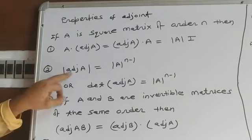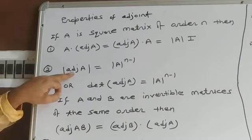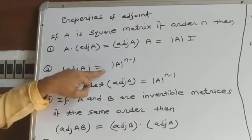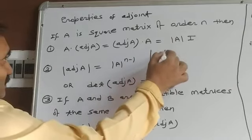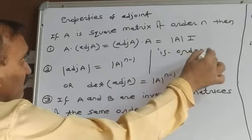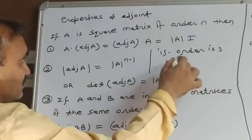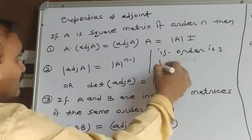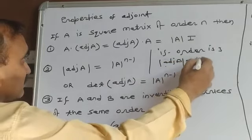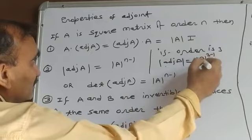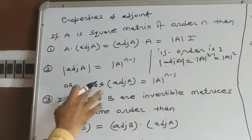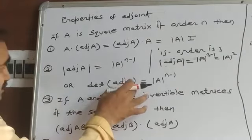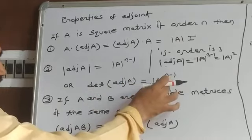Second property: the determinant of Adjoint A is equal to determinant A raised to the power n minus 1. Here n is the order of the matrix. For example, if the order is 3, then the determinant of Adjoint A equals determinant A squared. This is the second property of Adjoint.